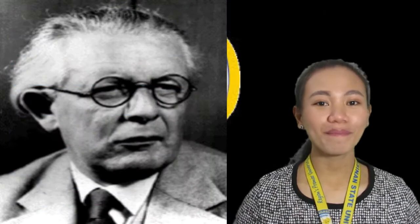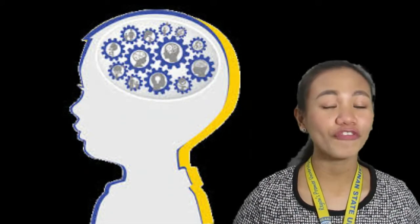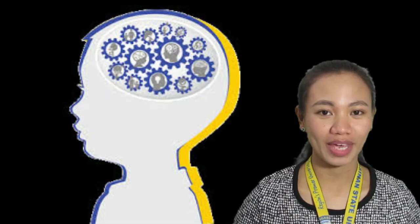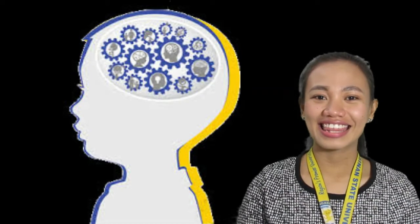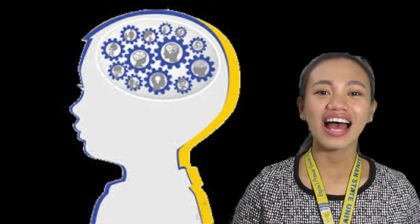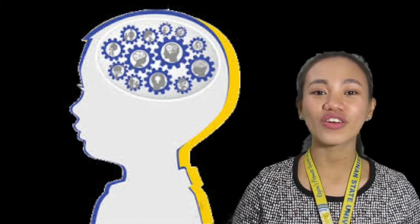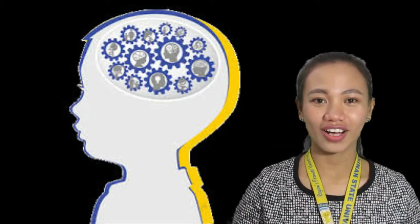In more simple terms, Piaget called the schema the basic building block of intelligent behavior — a way of organizing knowledge. It is useful to think of schemas as units of knowledge, each relating to one aspect of the world, including objects, actions, and abstract concepts.